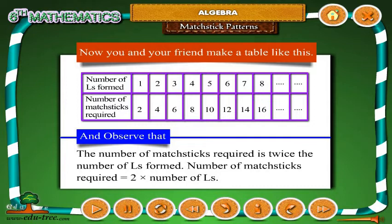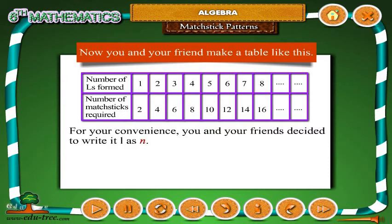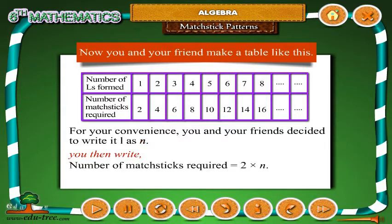Number of matchsticks required equals 2 into number of L's. For your convenience, you and your friends decided to write L as N. You then write: number of matchsticks required equals 2 into N.